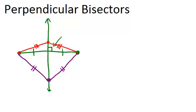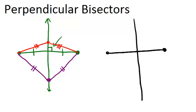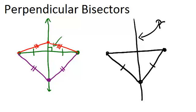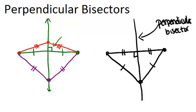Interestingly, the converse of this is also true. If you start with some segment and you have a line through it, and a point on that line connected to the two endpoints such that the two new segments are congruent to each other, that means the line must be the perpendicular bisector of the segment — meaning it must be perpendicular to the segment, creating a right angle, and the two halves must be congruent as well.